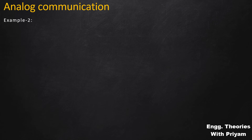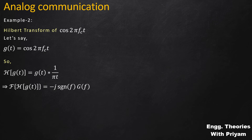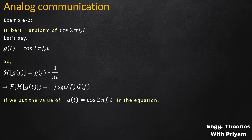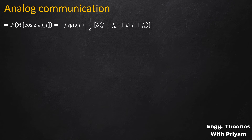Example 2: Find the Hilbert transform of cos(2πf_c·t). Using the frequency-domain approach, the Fourier transform of the Hilbert transform of g(t) equals −j·sgn(f)·G(f). The Fourier transform of cos(2πf_c·t) is (1/2)[δ(f − f_c) + δ(f + f_c)]. So the Fourier transform of the Hilbert transform of cos(2πf_c·t) equals −j·sgn(f) · (1/2)[δ(f − f_c) + δ(f + f_c)].